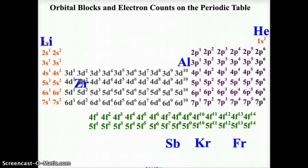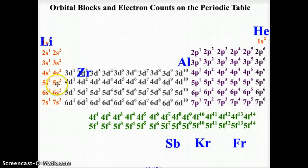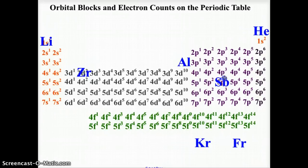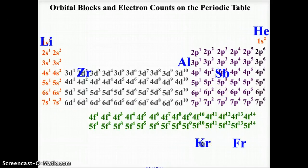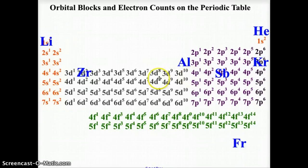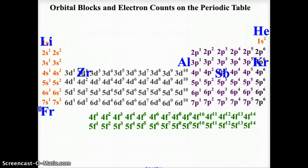Zirconium sits here at 4d2. We remind ourselves that the d is not a valence shell, so therefore we go back to the 5s2, and zirconium would have two valence electrons. Antimony sits here at 5p3; 5p3 gives us 5s2, 4d10, 5p3, and therefore s2p3 gives us 5 valence electrons. Krypton sits here at 4p6; s2 and p6 gives 8 valence electrons. And francium sits over here at 7s1, giving us 1 valence electron.